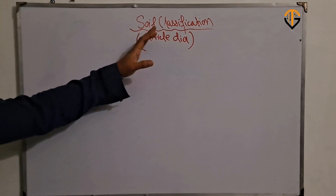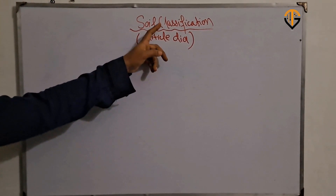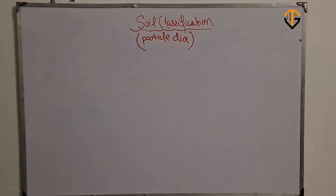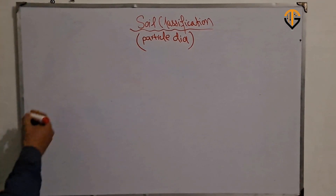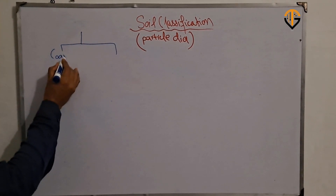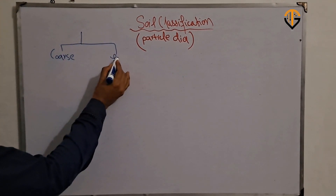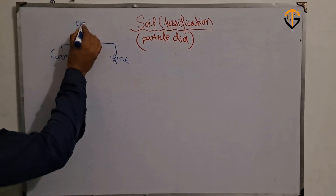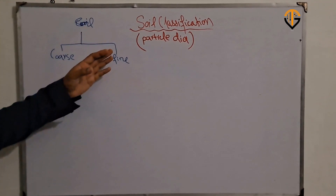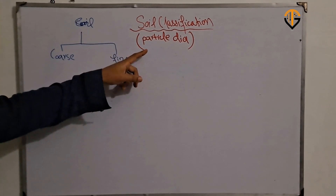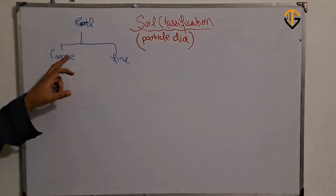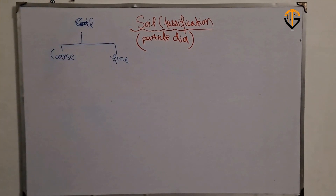Today we'll talk about soil classification, which is performed based on particle diameter. Soil is categorized into two major types: the first one is coarse type of soil, and the second one is fine type of soil.